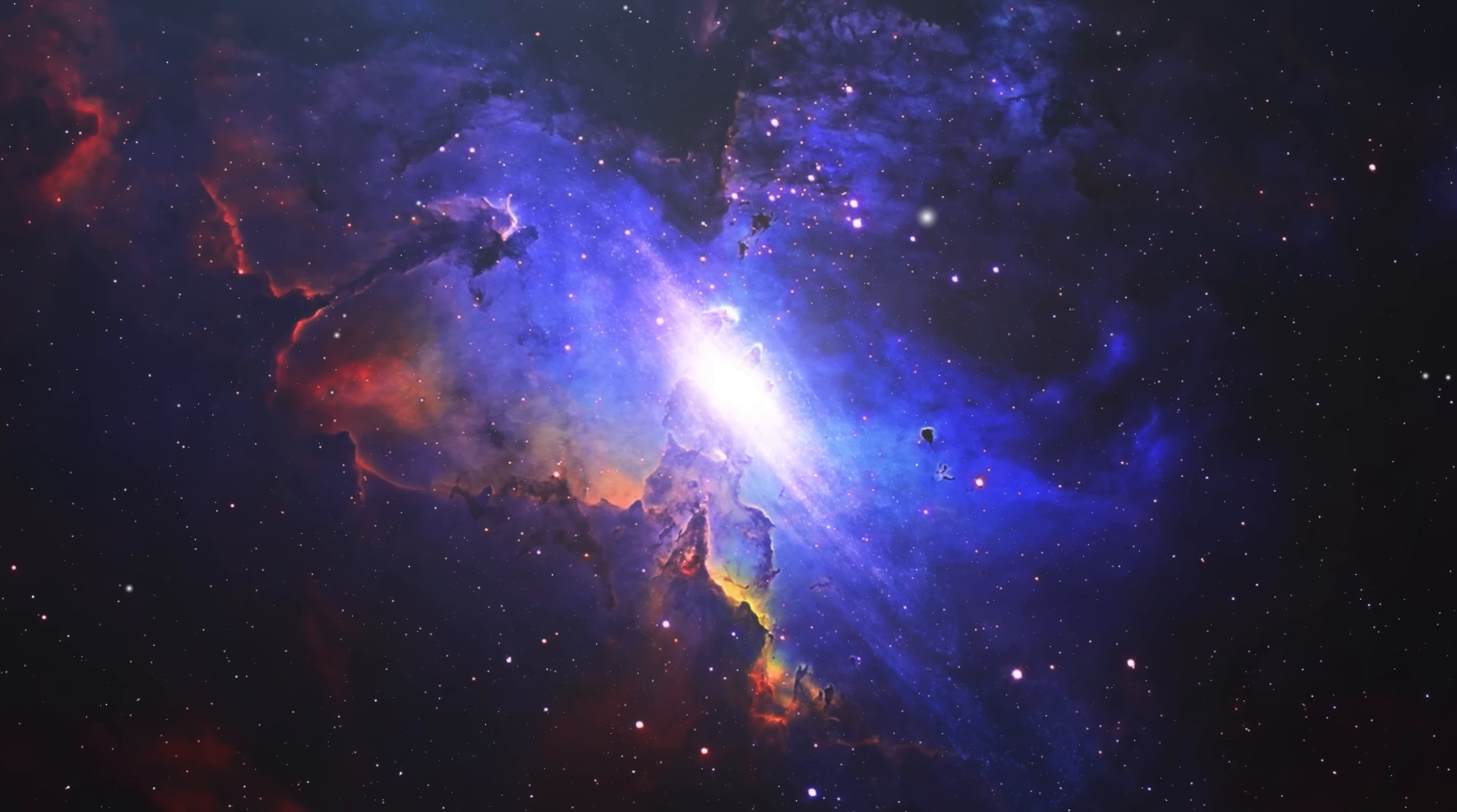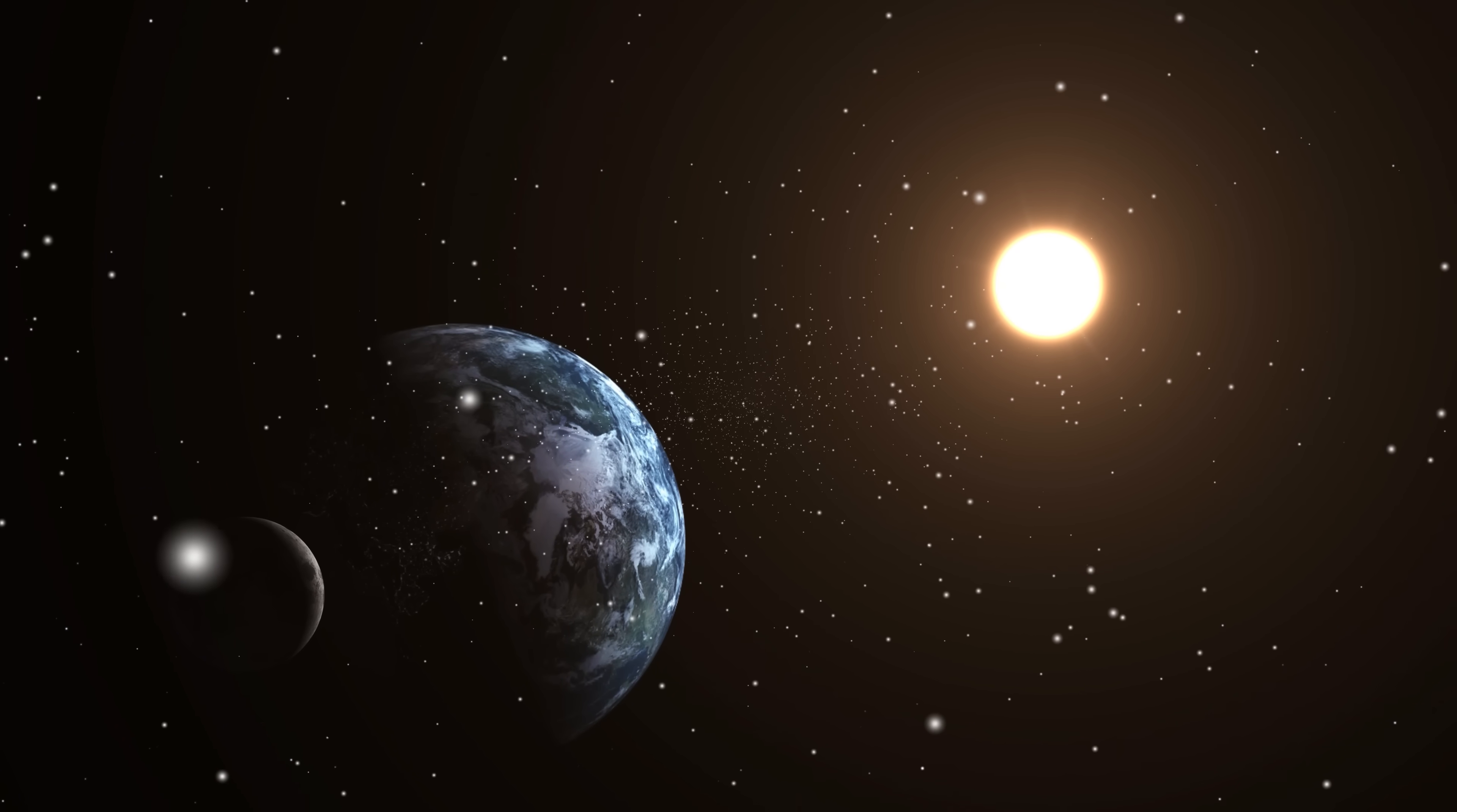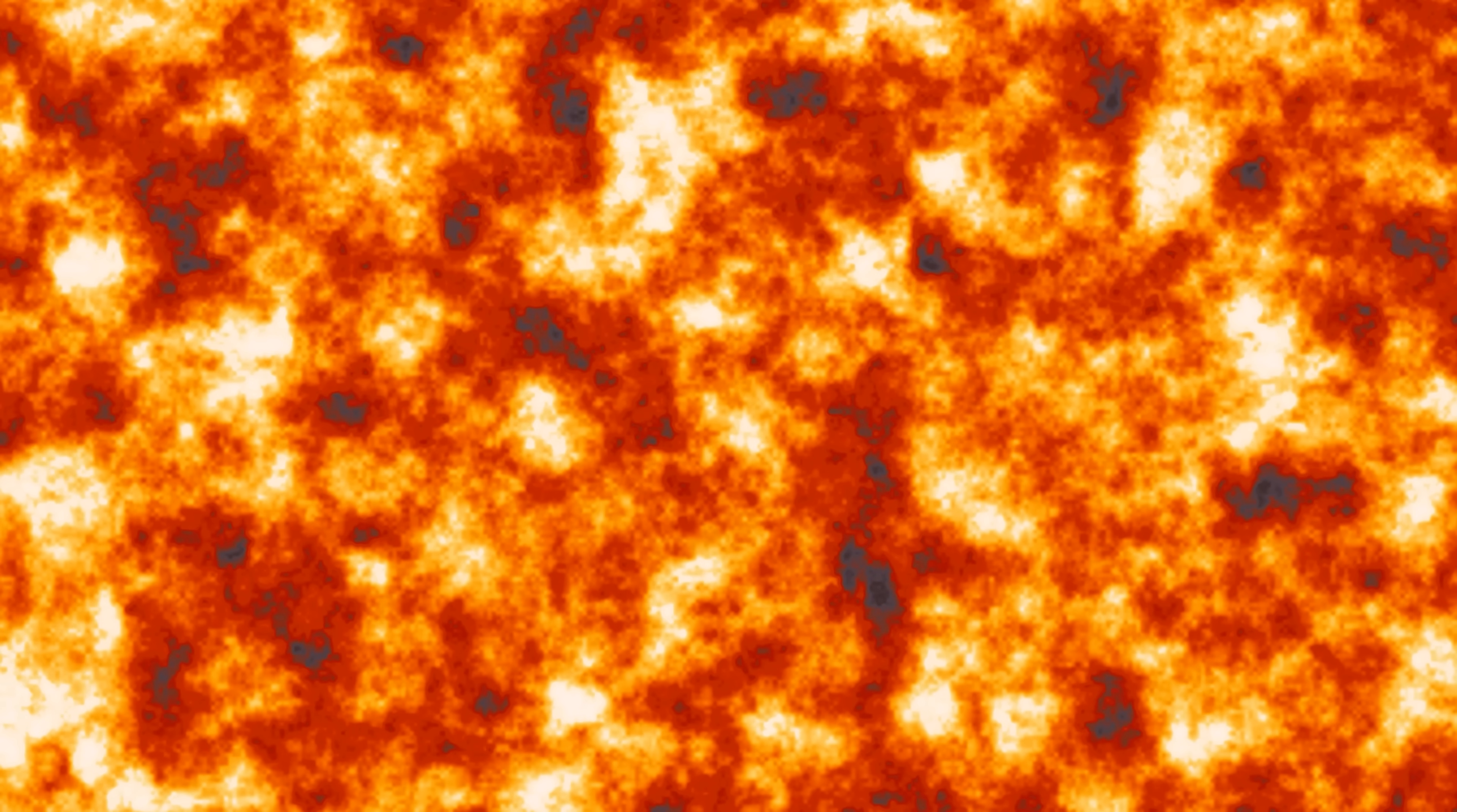Here's where it gets personal. If these galaxies truly exist as we're seeing them, it means the universe could create complex structures far faster than we imagined. This changes how we understand our own Milky Way's origins, and by extension, the chain of events that led to our Sun, our Earth, and ultimately to you watching this video right now. And if you think that's shocking, wait until you see what Webb discovered about a planet where the clouds are made of vaporized rock and it rains molten lava at night, but that's a story for the next chapter.